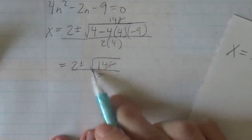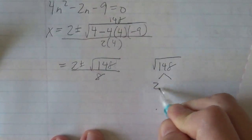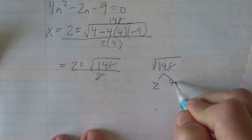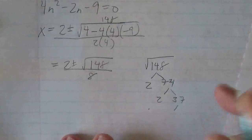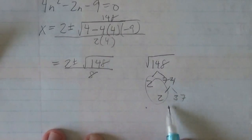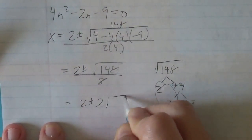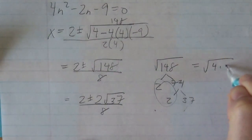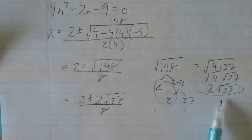And then we have to simplify that square root if possible. So 148 breaks down to 2 and 74, getting lazy today, which is 2 and 37. So I've got a pair of 2s that come out and the √37 stays inside. So 2 ± 2√37 all over 8. So this would be like 4 times 37, which is √4 times √37, which is 2√37.